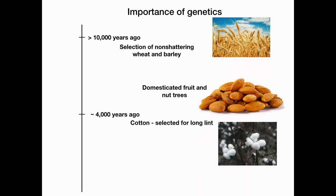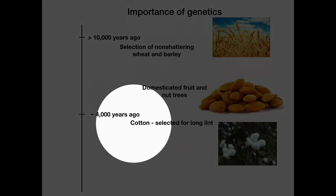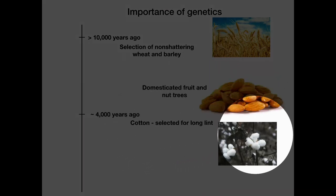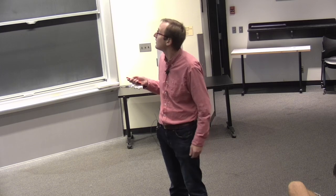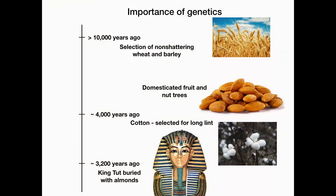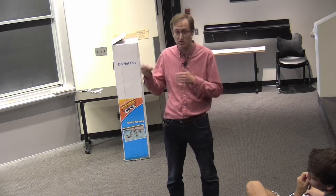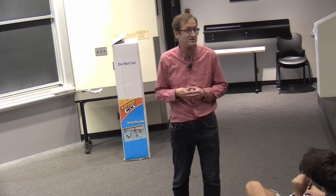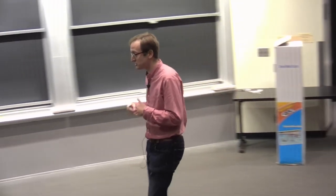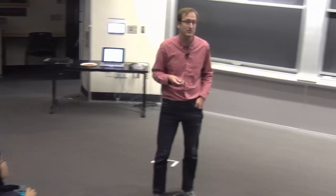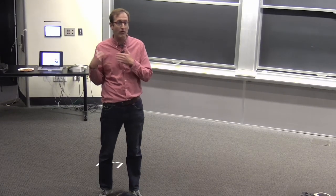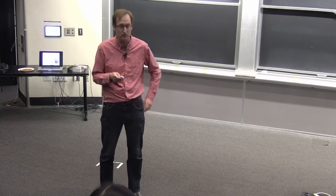This doesn't just go for foods, but also for clothing. Humans selected for cotton with long lint, which served as a basis for fabric and clothing. The archaeological evidence for when almonds were domesticated was found when King Tut's tomb was unearthed — they found a pile of almonds next to the tomb, because Egyptian culture buried the dead with food to sustain them in the afterlife.